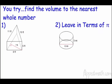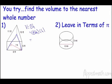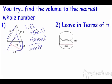For the first practice problem, we want the volume of a triangular prism. Volume equals big B times h, where big B is the area of the triangle: one half base times height. The triangle's height is 7 and the base is 11, and the prism height is 6. So: one half times 11 times 7 times 6 equals 231 cubic feet.